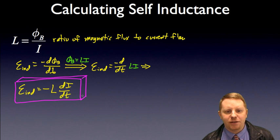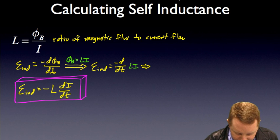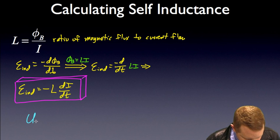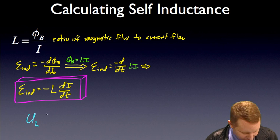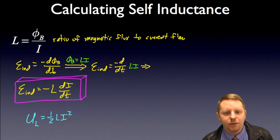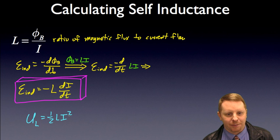As well, we could talk about the energy stored in an inductor. Just like with the capacitor, we had energy stored in the electric field. In an inductor, we're going to have energy stored in the magnetic field. The energy stored in an inductor we can find using the formula: UL is one-half L i squared. Notice the parallel to our study of capacitors and the energy in capacitors.